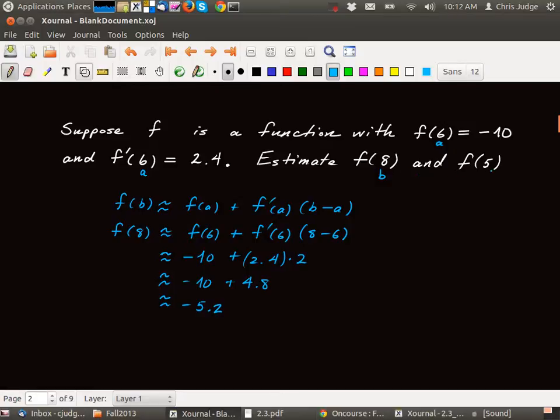Let's look at how we estimate f of 5. It's the same process. We use the same local linear approximation formula. Except this time what we're interested in is finding out what f of 5 is.